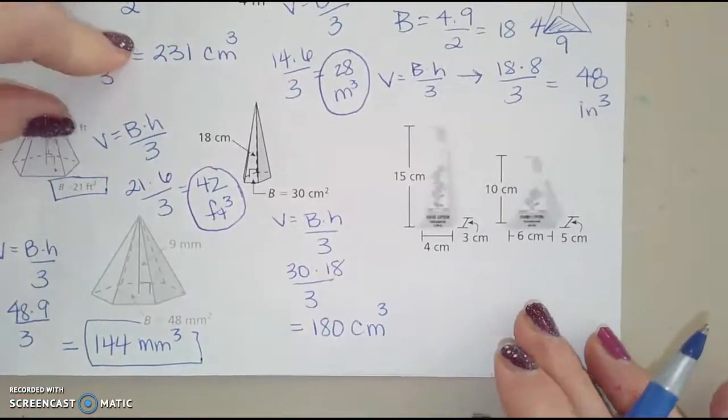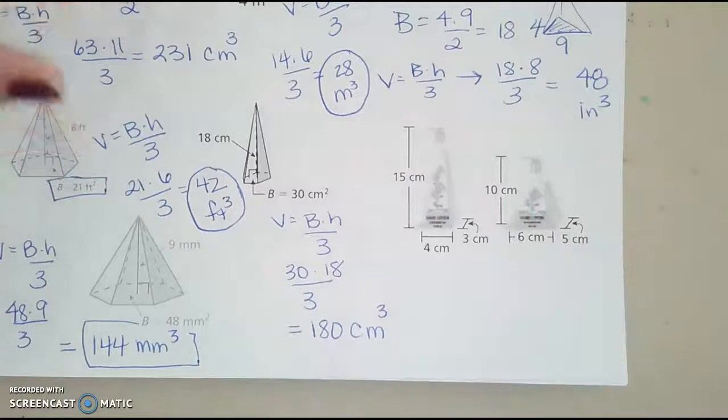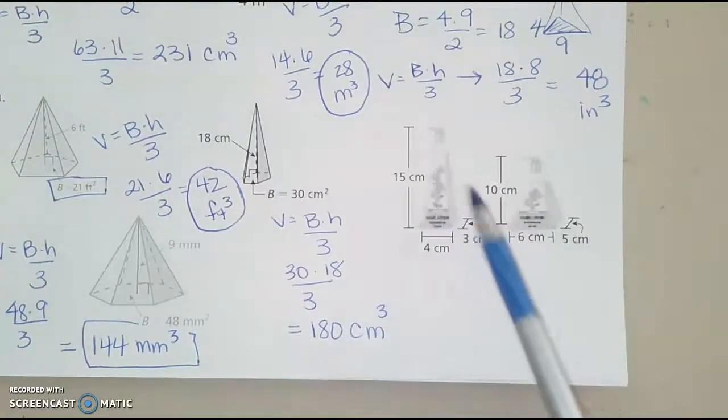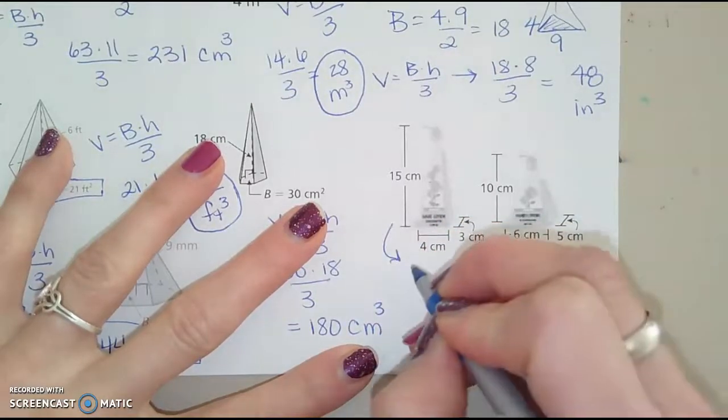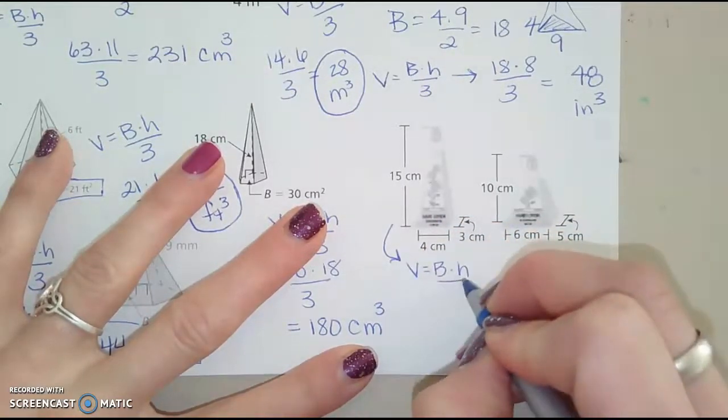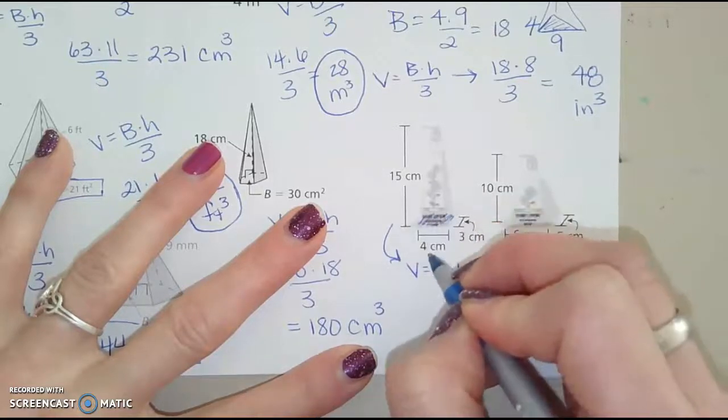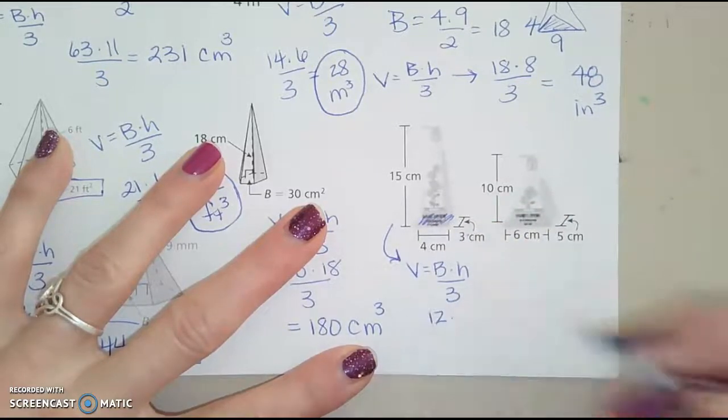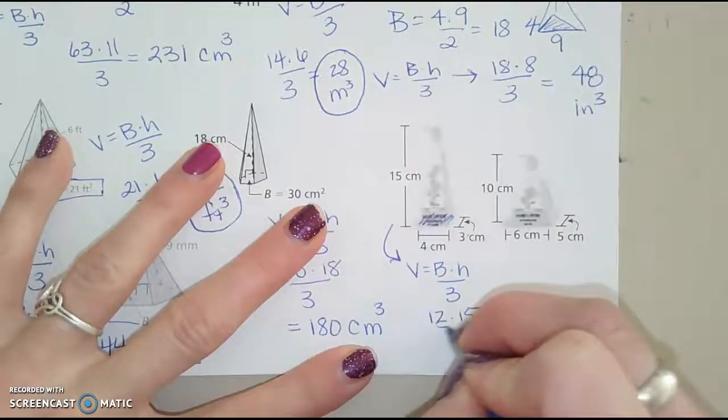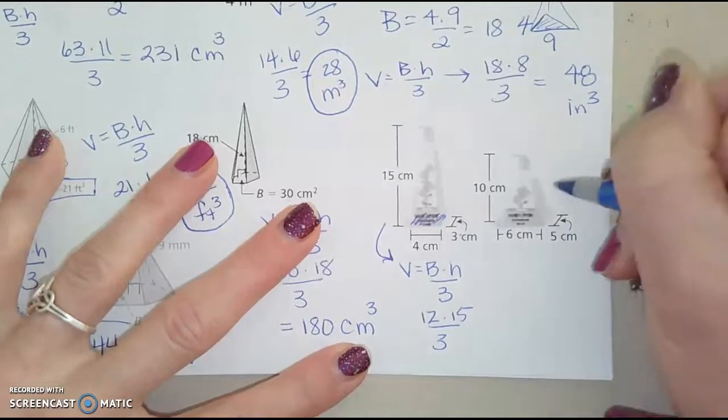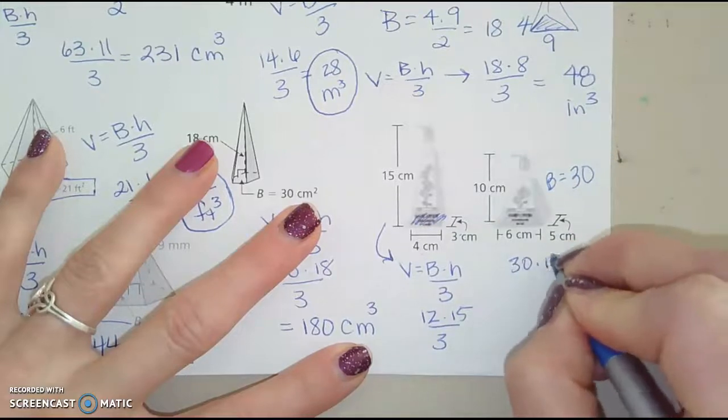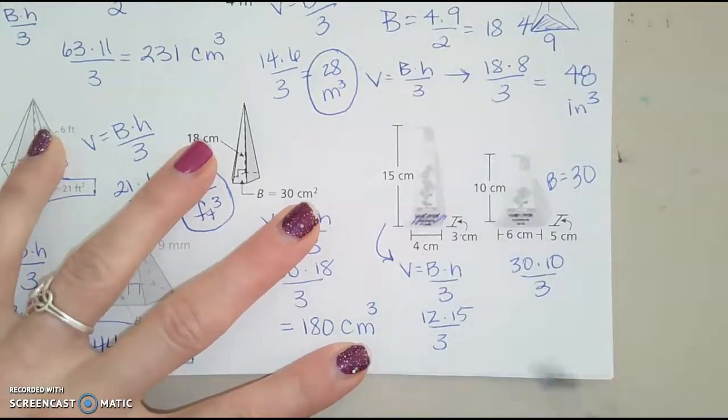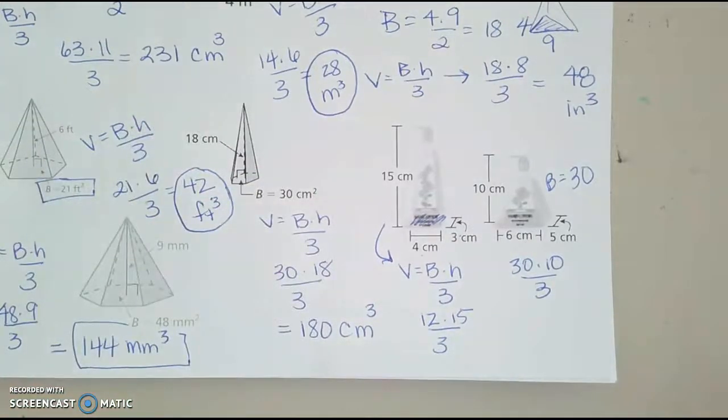Okay, last question over here. I didn't type in the actual words, but this one is just saying compare the volume of these two different soap dispensers and see which one holds more soap. So we'll just find the volume of each of these. So this one, capital B times H divided by 3. Well, the base of this one, 4 times 3 would be 12, 12 times a height of 15 divided by 3. And then here, again, now I have a base of 30. So 30 times 10 divided by 3. Go ahead and finish calculating both of these and figure out which one holds more.